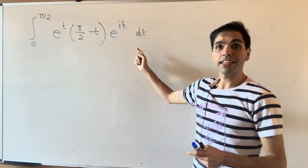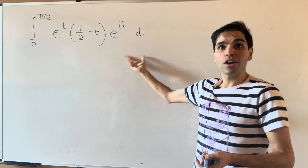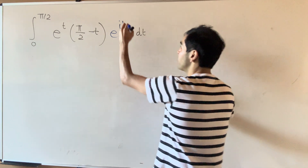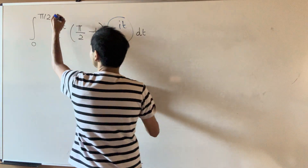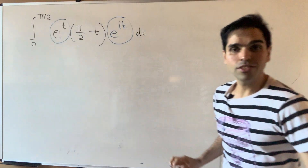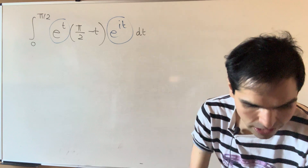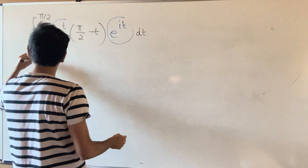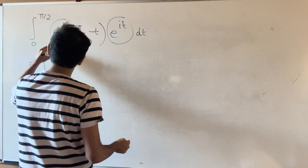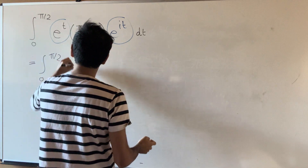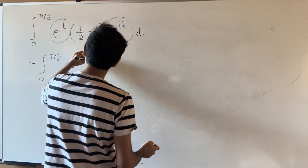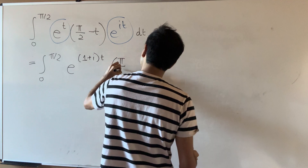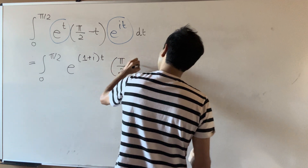We will kill literally two birds with one stone by using complex exponentials. So instead of evaluating the stuff with cosine and sine separately, let's replace it with e^(it), which is very nice because it combines with the e^t. So what we end up getting is the integral from 0 to π/2 of e^((1+i)t) times (π/2 − t) dt.